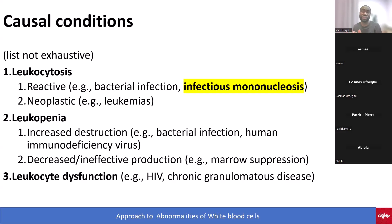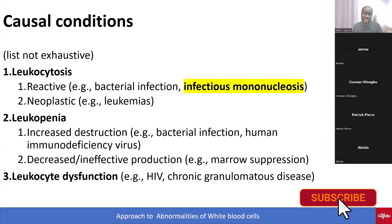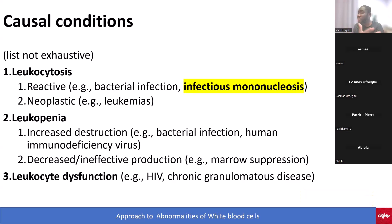Bacterial infections causing leukocytosis include pyelonephritis and meningitis. Infectious mononucleosis is another important cause — I highlighted it because it's a very important topic to master. Many candidates think they know infectious mononucleosis — they know to hold off sports, to do the monospot test, and that amoxicillin can cause a rash — but beyond those three points, you need much deeper knowledge, especially since the exam is moving to MCQs only starting April 2025.